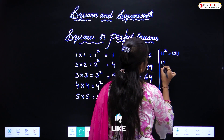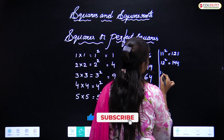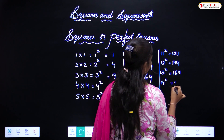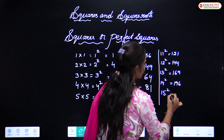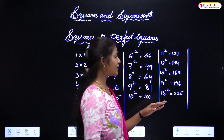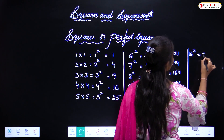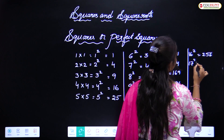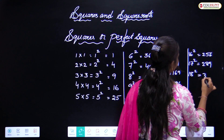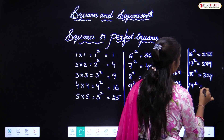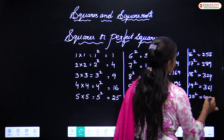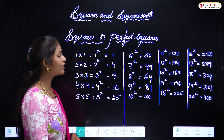Eleven squared is 121. Twelve squared is 144. Thirteen squared is 169. Fourteen squared is 196. Fifteen squared is 225. Sixteen squared is 256. Seventeen squared is 289. Eighteen squared is 324. Nineteen squared is 361.